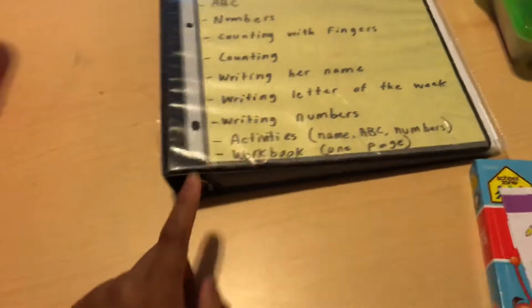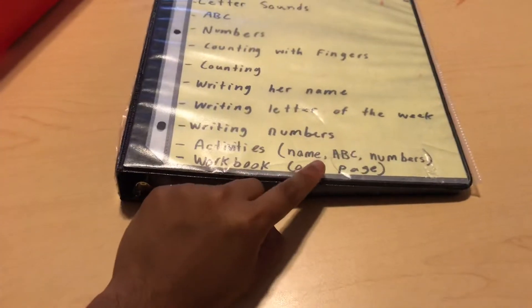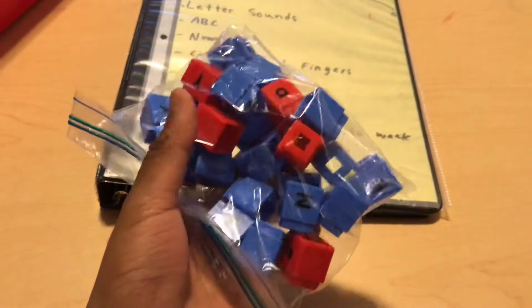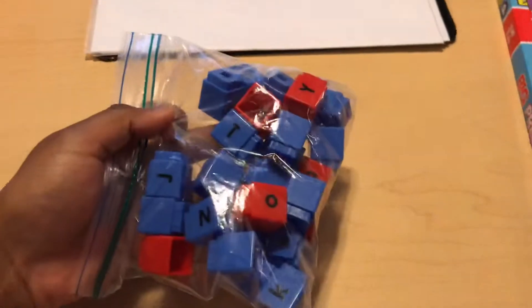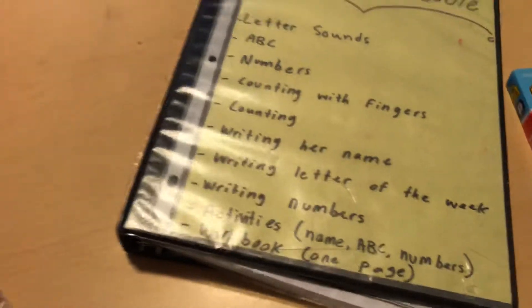For activities, we do three types of activities: name activity, ABC activity, and number activity. For the name activity, I use the unifix cubes. I just take out the letters in her name, and what I do is she has her name right in front of her, she has the letters of her name, and she just puts the cubes together to form her name while also looking here. That's a name activity that I do with her.